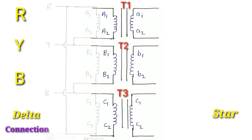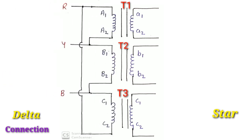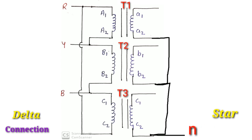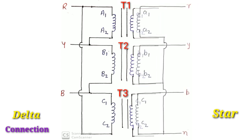Now for the secondary side: the second terminals of all three transformers — a2, b2, and c2 — are combined together to form a neutral. The remaining three terminals a1, b1, and c1 are the three phases, that is R, Y, and B.